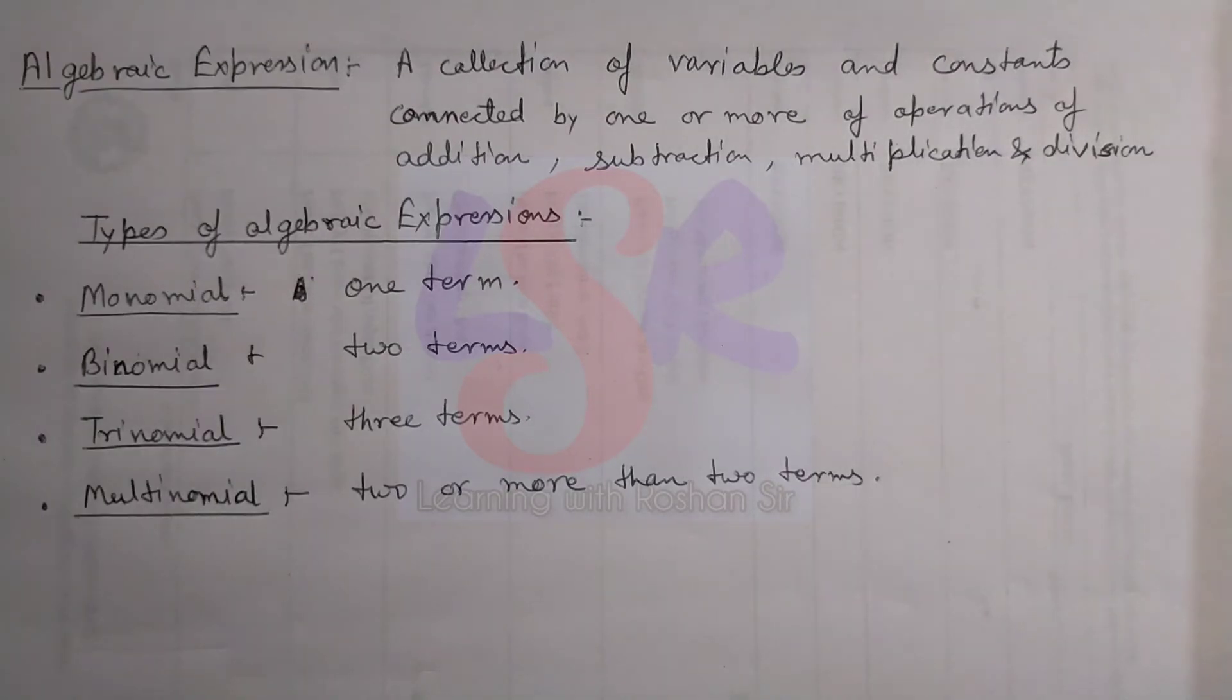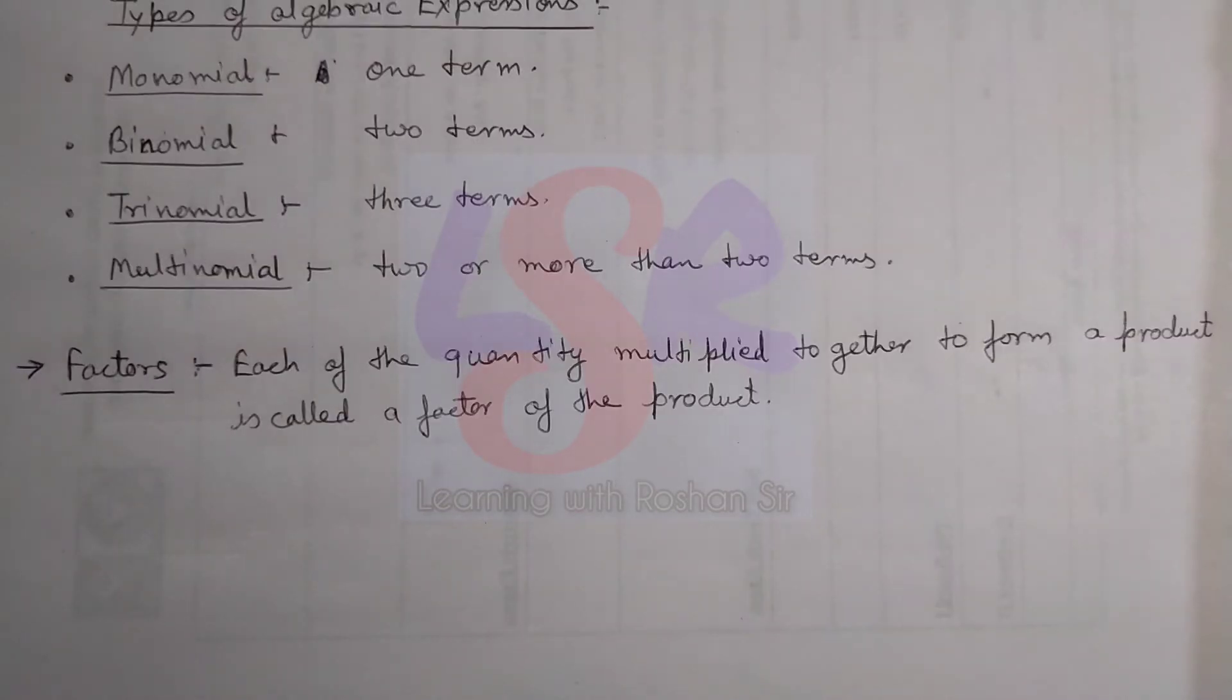After types of polynomials or algebraic expressions, we will go for a few more terms. Here we have factors. Each of the quantities multiplied together to form a product is called the factor of that product.